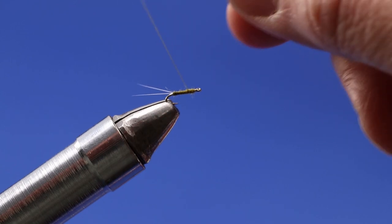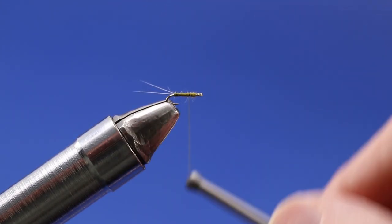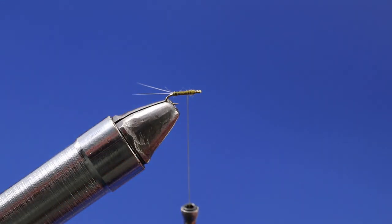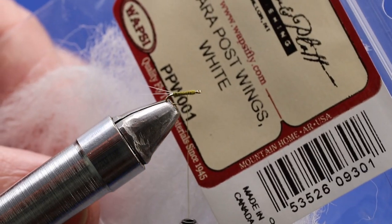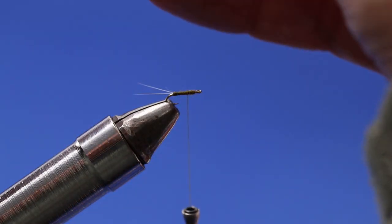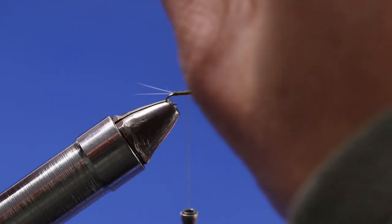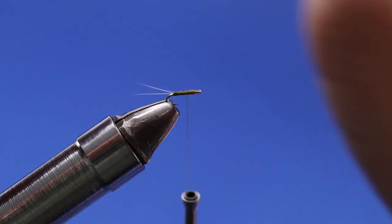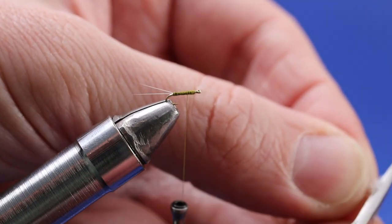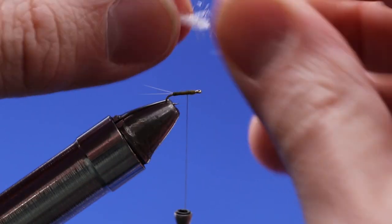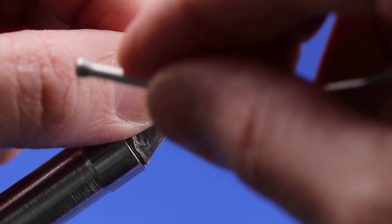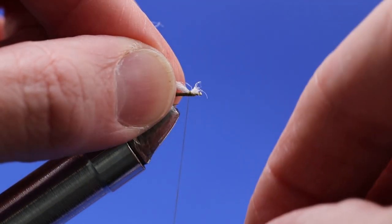I'm going to take my thread back to about a third of the way down the shank of that hook. For wing material today, I'm just going to use some white synthetic para post. I like to kind of twist the ends a little bit and snip them off flush to each other. Lay it on top, give it a pinch wrap, a couple more wraps.